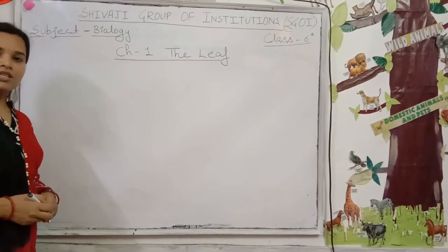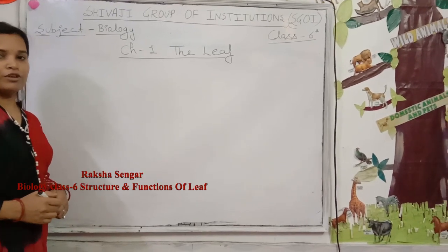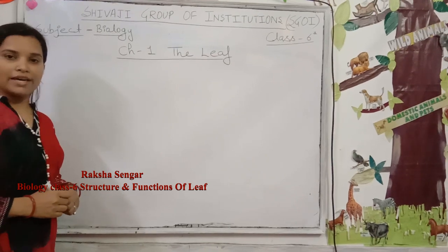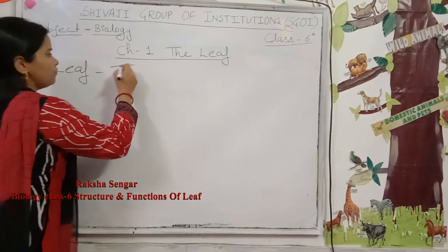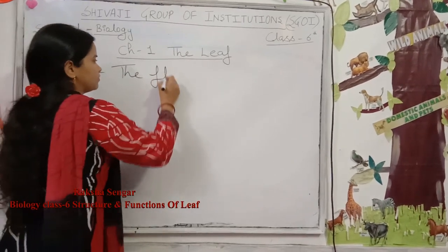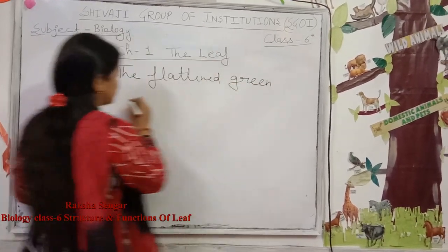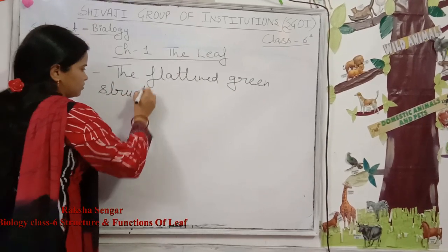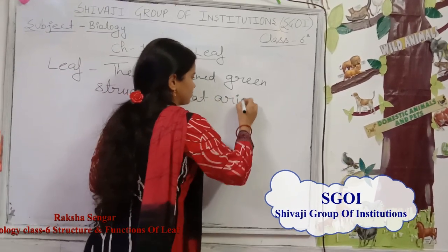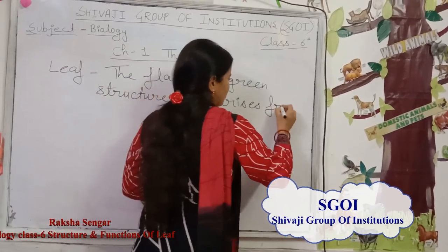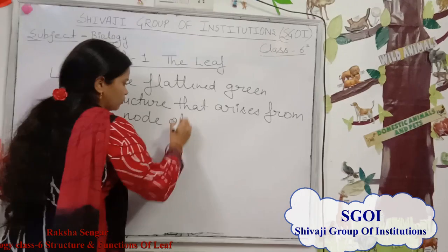What is a leaf? You see leaves in your daily life. Generally, leaves are of green color. Leaves are of different shapes and different sizes, but generally green in color. A leaf is the flattened green structure that arises from the nodal structure.